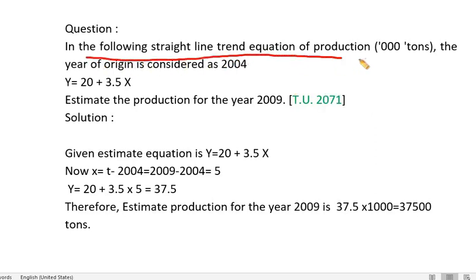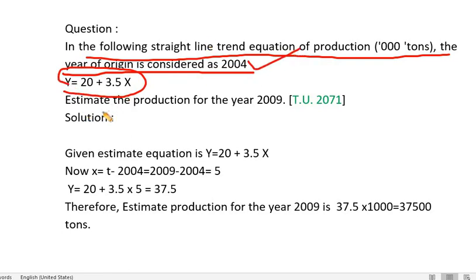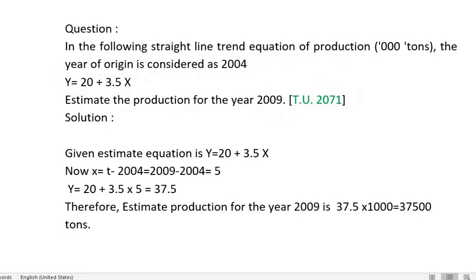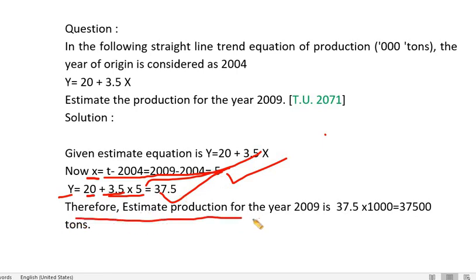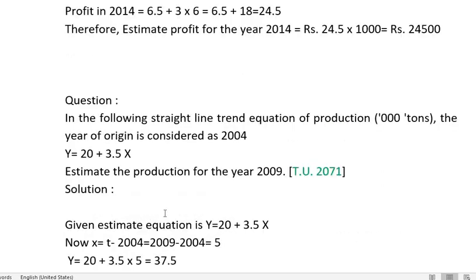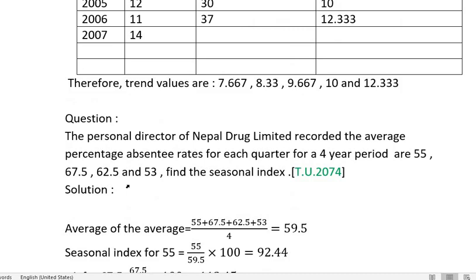In the following straight-line trend equation of production in 1,000 tons, the year of origin is 2004. The equation is used to estimate the production for the year 2009. With x equals 2009 minus 2004 equals 5, the result is 37.5 multiplied by 1,000 tons. The estimated production for 2009 is 37,500 tons.